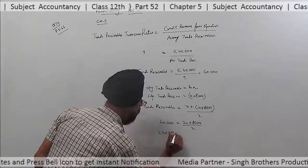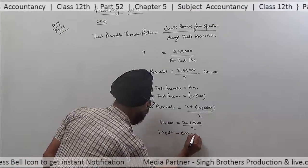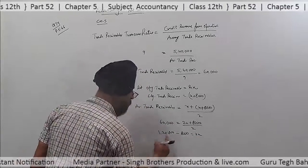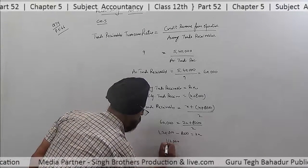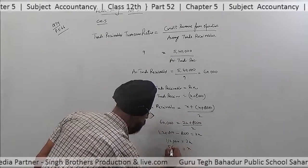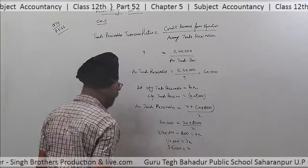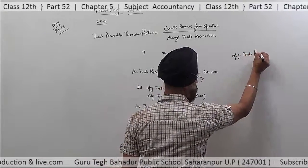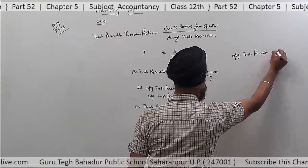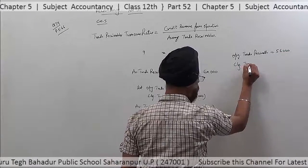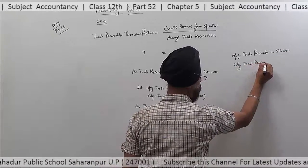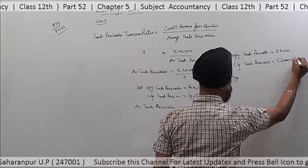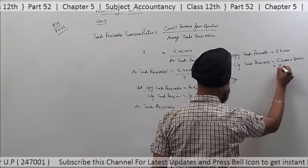So, 60,000 equals 2X plus 8,000 divided by 2. Therefore, 1,20,000 minus 8,000 equals 2X, giving us 1,12,000 equals 2X, so X equals 56,000. Opening trade receivables equals 56,000 and closing trade receivables are 8,000 more, so 56,000 plus 8,000 equals 64,000 rupees.